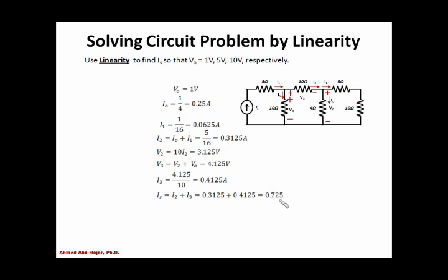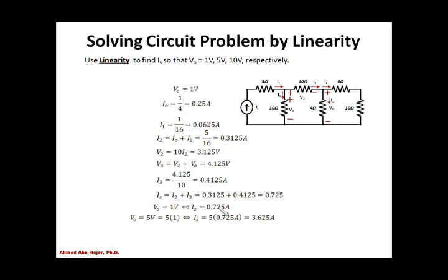When the output is 1 volt, IS equals 0.725 amps. If I make the output 5 volts — which is 5 times 1 — then by linearity the input is also 5 times IS, giving 3.625 amps. I solved for part B basically by linearity: I increased the output by a factor of 5, so the input is increased by a factor of 5.